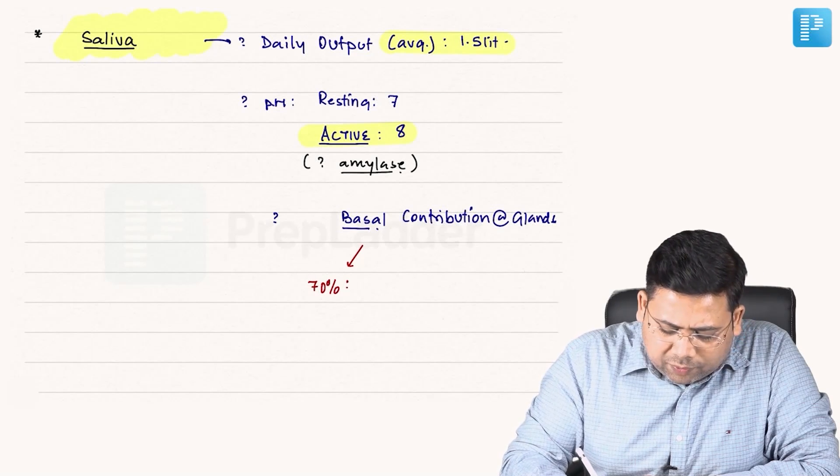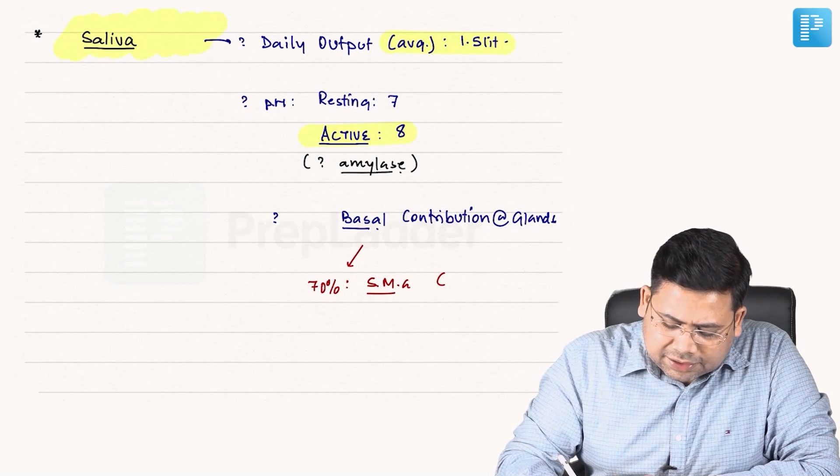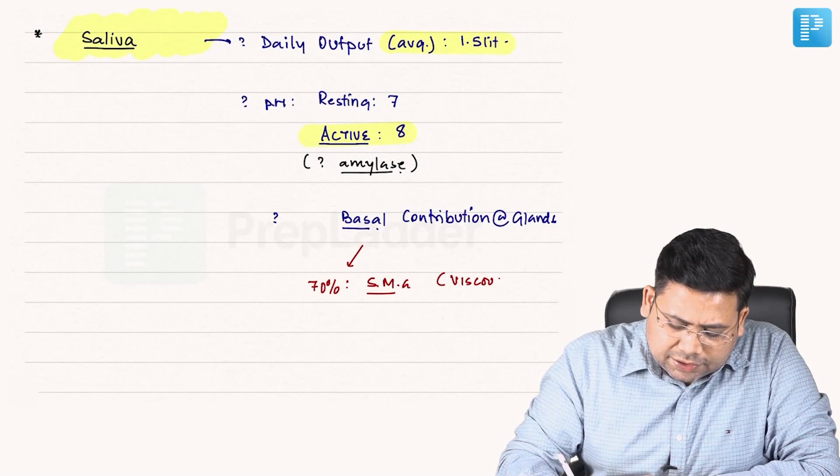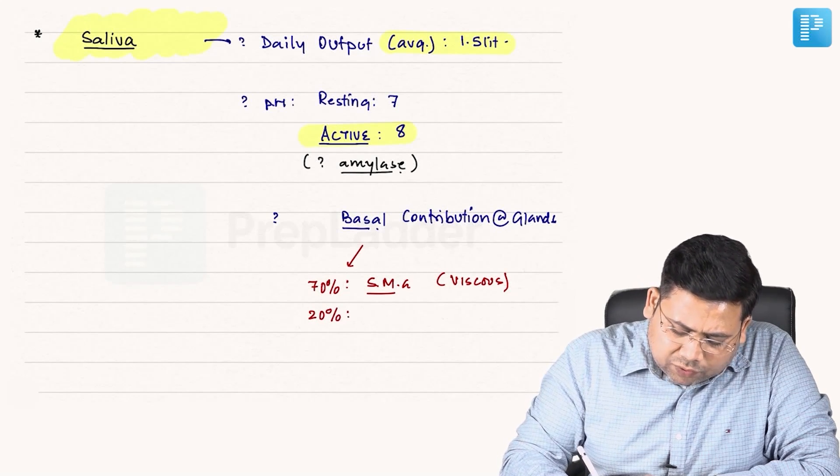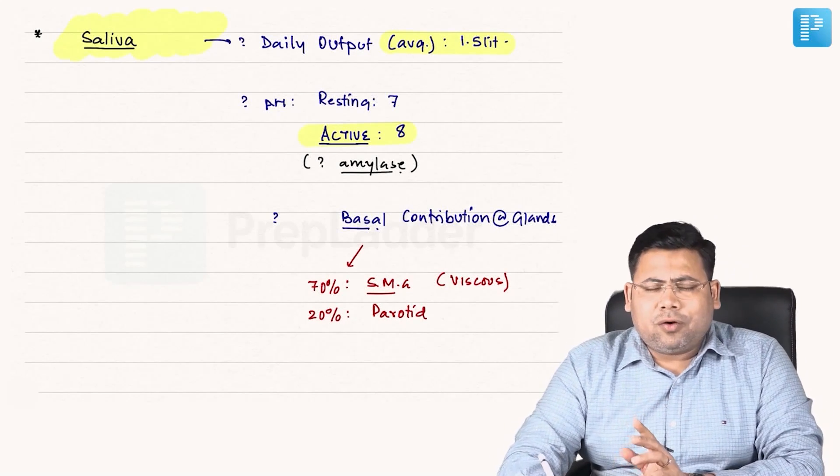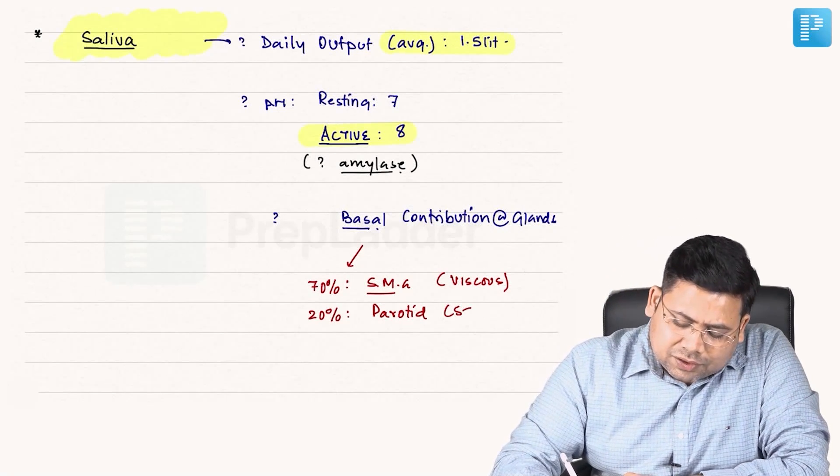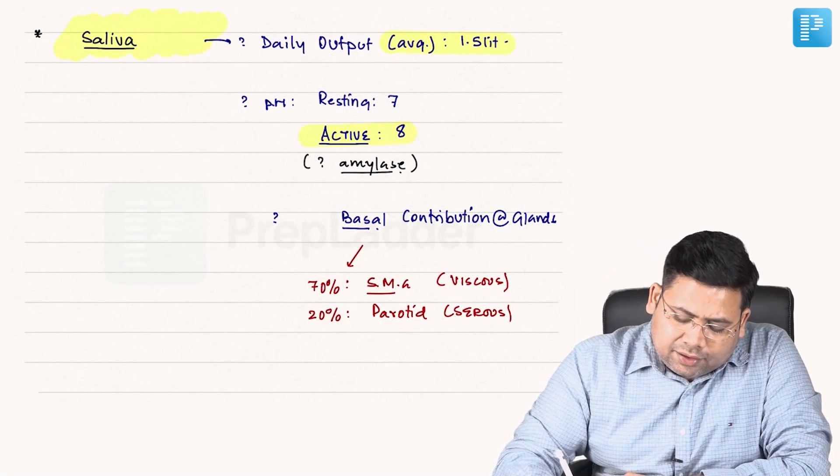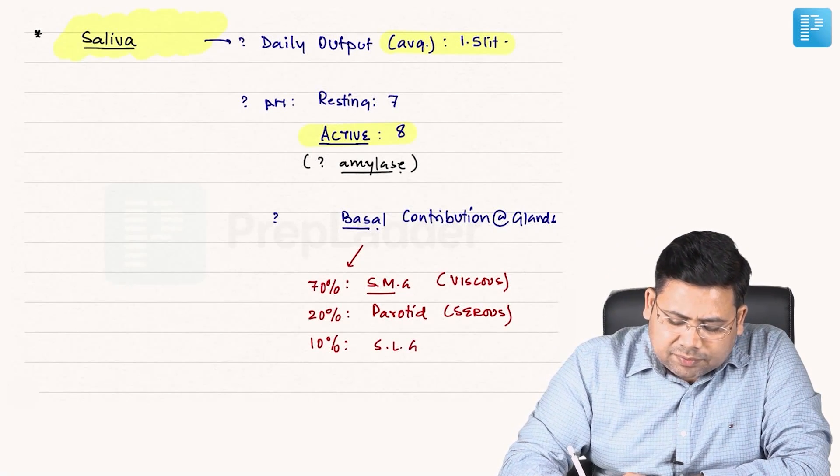Basal composition or basal contribution with respect to the glands: 70 percent of the saliva is contributed by submandibular gland and the nature is viscous. Always remember the nature is viscous. 20 percent of the saliva is contributed by parotid and the parotid saliva is serous in nature.